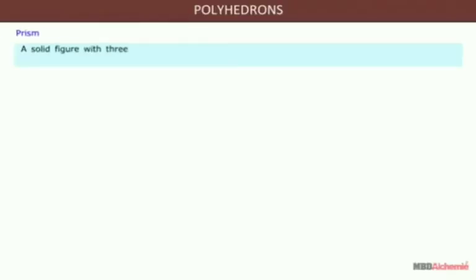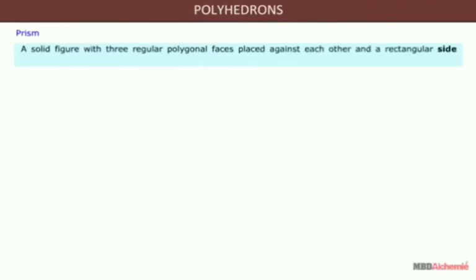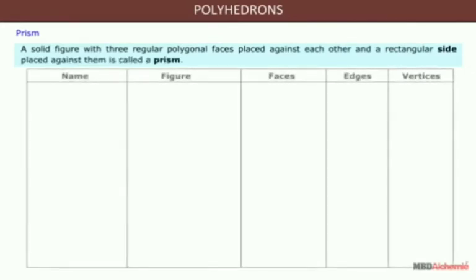Prism: a solid figure with two regular polygonal faces placed against each other and rectangular sides placed against them is called a prism.